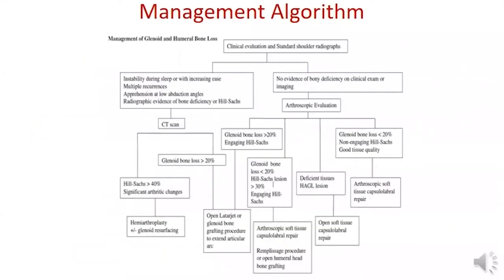The management algorithm for shoulder instability is based on clinical, CT, and arthroscopic evaluation. If the Hill-Sachs lesion is larger than 40%, hemiarthroplasty is indicated. If glenoid bone loss exceeds 20%, the Latarjet procedure is indicated regardless of Hill-Sachs engagement. If glenoid bone loss is less than 20% with an engaging Hill-Sachs lesion, arthroscopic Bankart repair plus remplissage is used. HAGL lesions require open Latarjet, and non-engaging lesions with good tissue quality may be treated with arthroscopic Bankart repair alone.